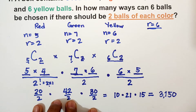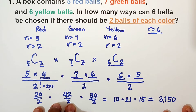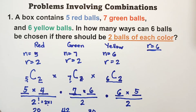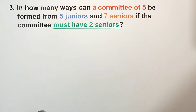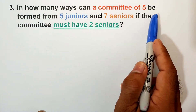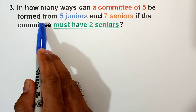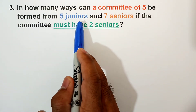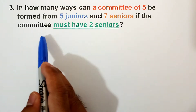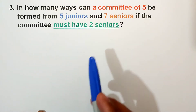Now let us have item number two. In how many ways can a committee of five be formed from five juniors and seven seniors if the committee must have two seniors?